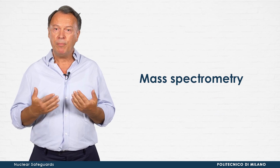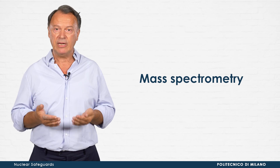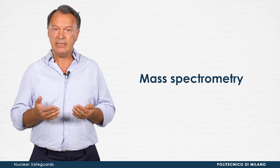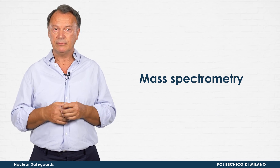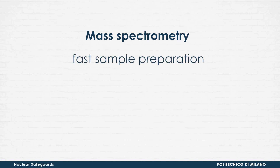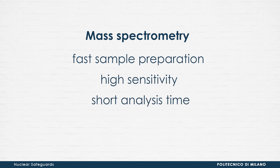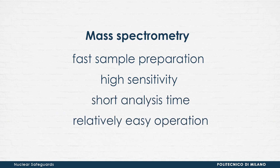In recent years, mass spectrometry has become increasingly popular for the determination of long-lived radionuclides and isotopic ratios at trace and ultratrace concentration levels. Mass spectrometry enables fast sample preparation consisting of simple dilution with ultrapure reagents, which reduces the background contribution. Because of its high sensitivity, short analysis time, and relatively easy operation, mass spectrometry has been widely used for the determination of isotopes of uranium, thorium, and plutonium in environmental and waste samples.